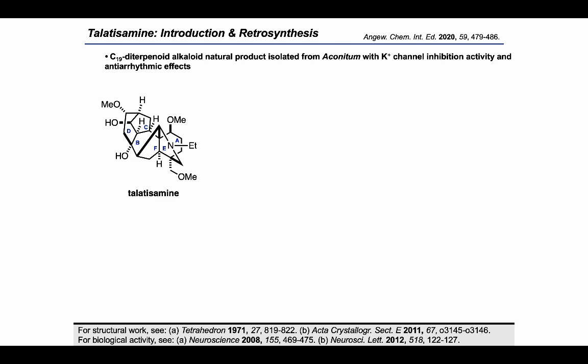As a brief introduction, talatissamine is a C19-diterpenoid alkaloid natural product that was isolated from Aconitum, a plant also called monk's hood or wolf's bane. This target has been shown to have potassium channel inhibition activity as well as antiarrhythmic effects. It has a daunting hexacyclic ring system composed of the A, B, C, D, E, and F rings.